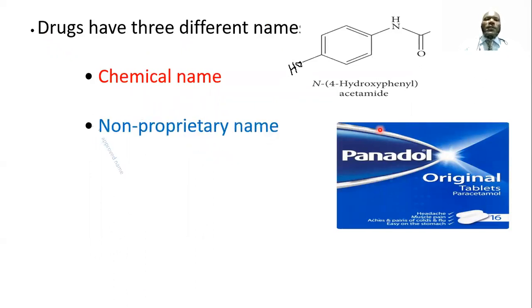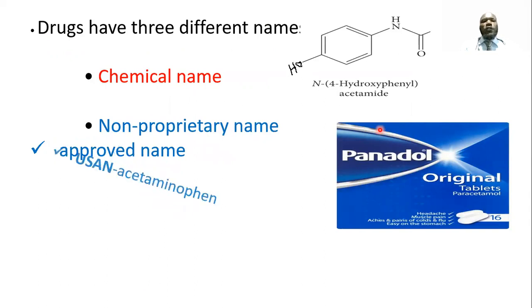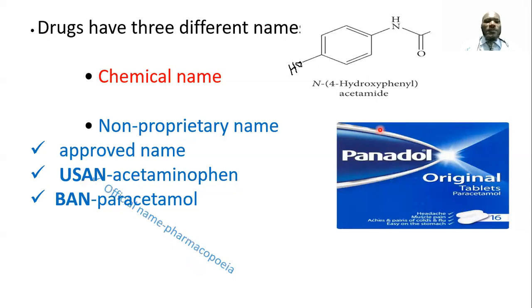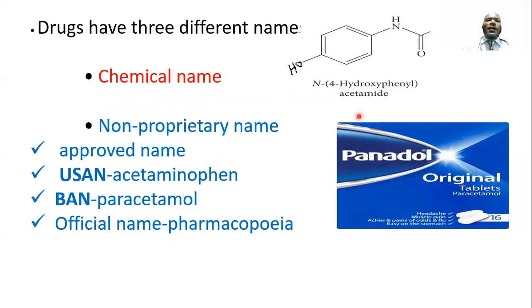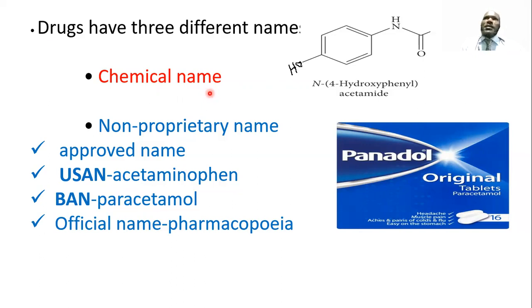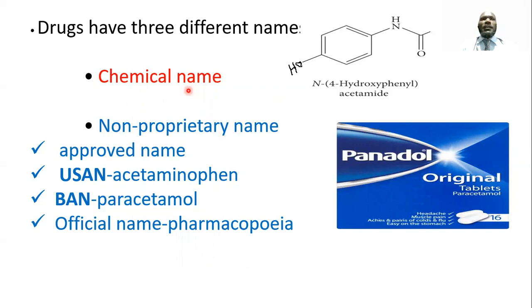Number one is the chemical name. We also have non-proprietary names, and proprietary names. The chemical name is the name assigned to the new chemical entity once it is introduced. In drug development, the lead molecule is assigned a chemical name, which shows the arrangement of atoms and atomic groups in the molecule. You cannot use the chemical name in clinical and marketing situations.